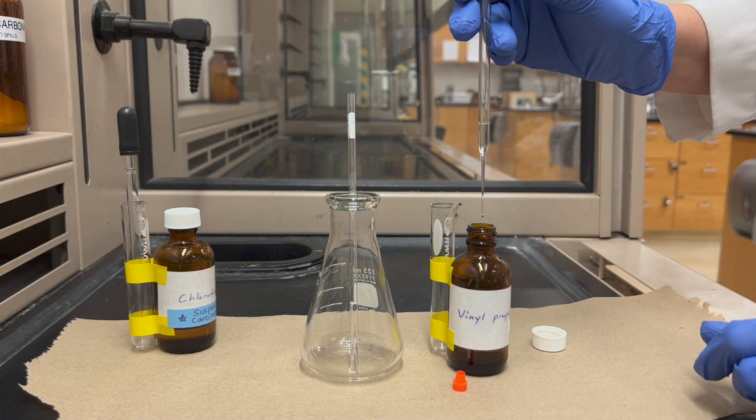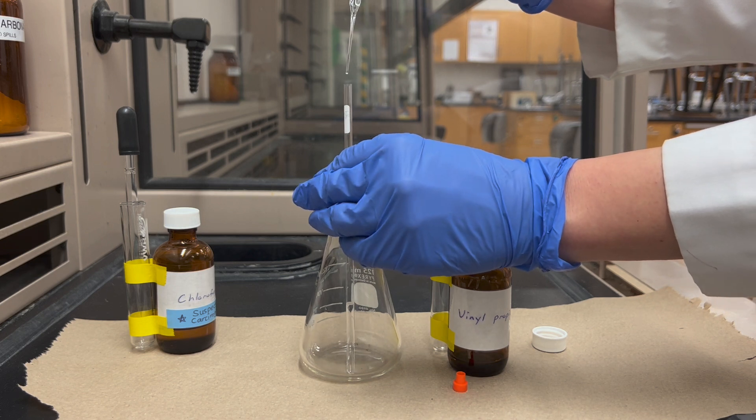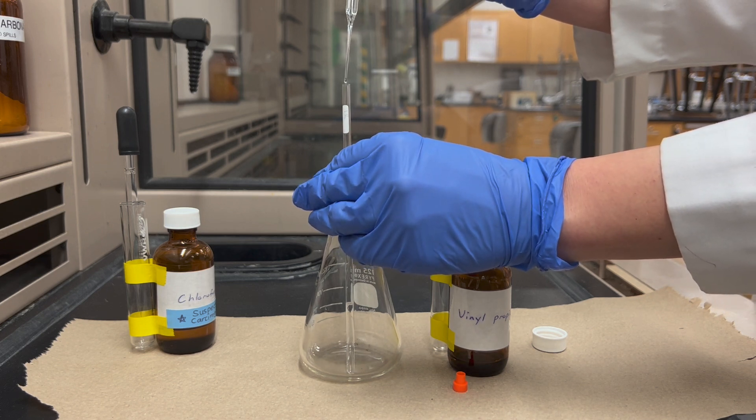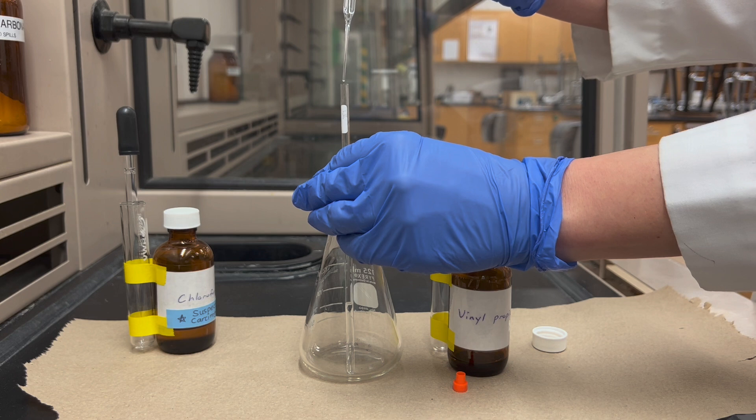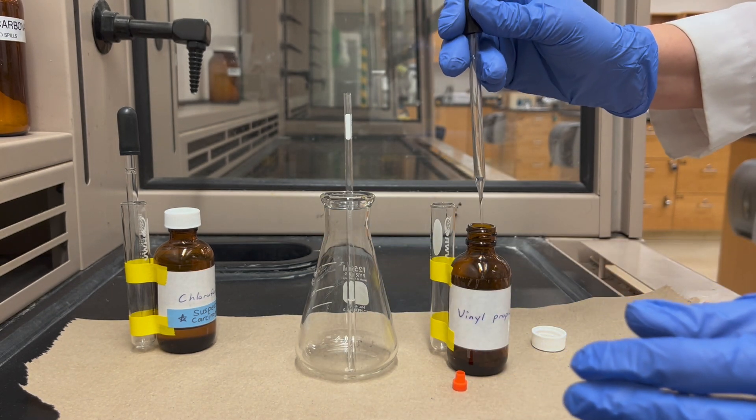Now I'll add that to the tube. To try to prevent contamination on the pipette tip, I'm going to try not to touch the tube with the pipette. I'll be adding six drops to the NMR tube.